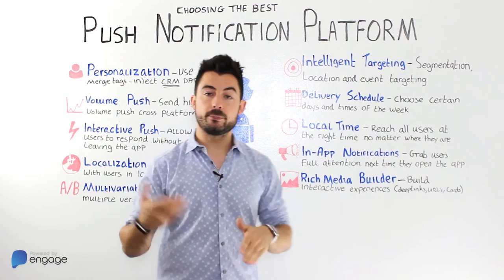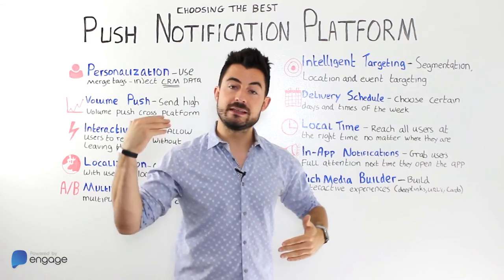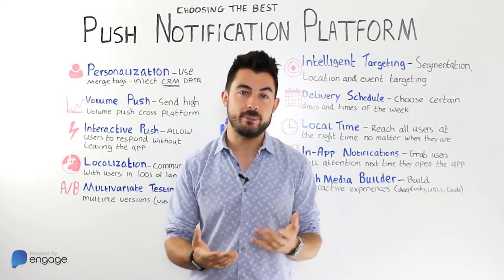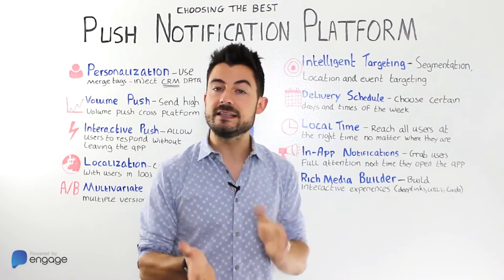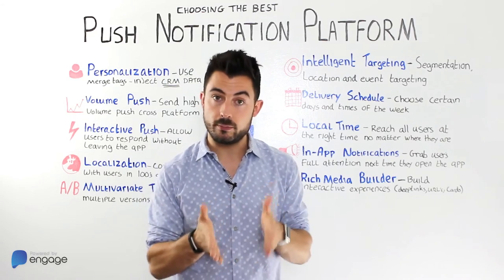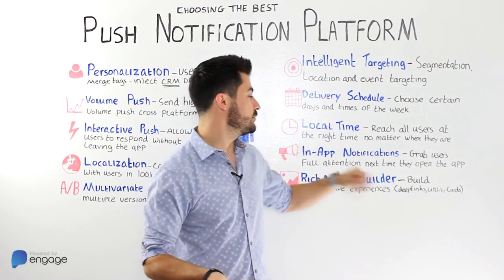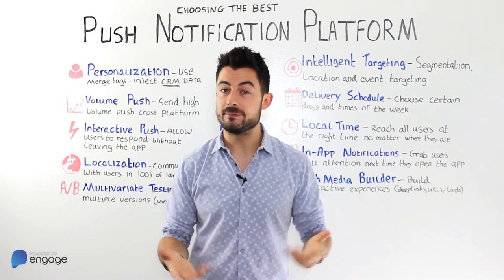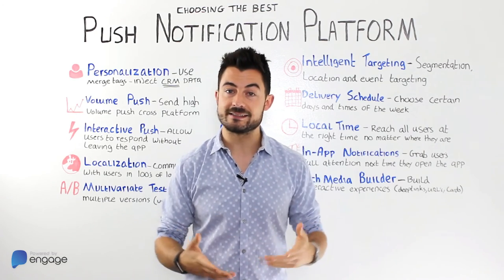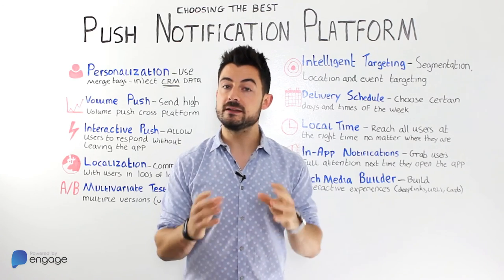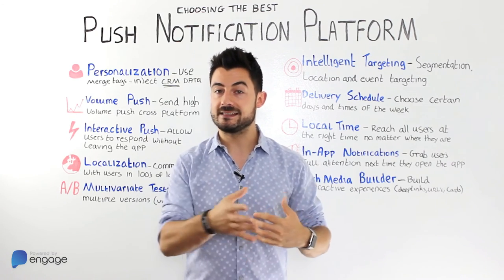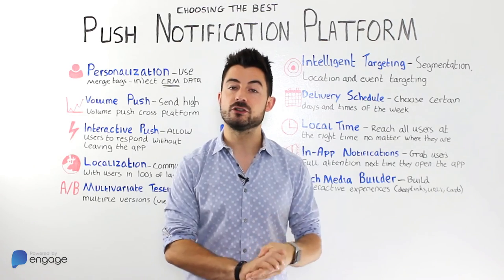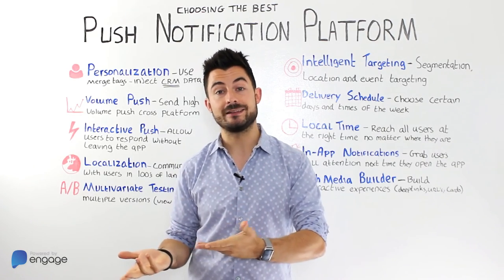And of course a rich media builder — if this comes with the push platform, even better. It's one thing to allow your push notifications to be deep-linked to a screen within your app, but then for every campaign you have to build those screens one by one. If you have a rich media builder, you can create with drag-and-drop, images, and text to build the experience, and then the SDK pulls it down and when users open the push it renders that rich campaign.